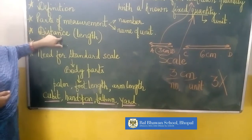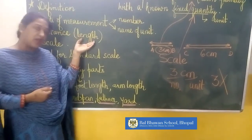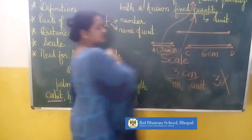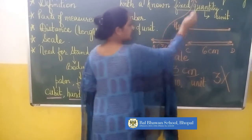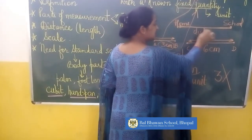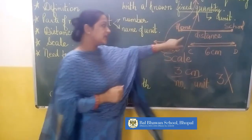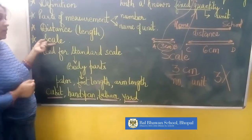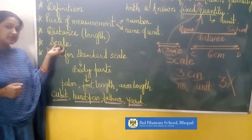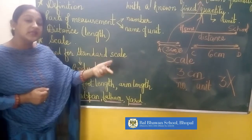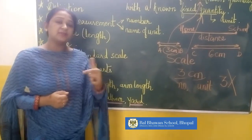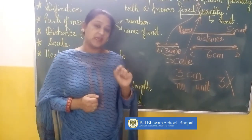Now comes distance. What is distance? Distance means length. Length is the part between two points. Suppose this is your home and this is your school — in between these two points we call it distance, or we can also call it length. Now, what makes our work easier to measure length? It is the scale. A scale can be taken from one place to another easily — you can carry it anywhere, we can carry the measuring tape anywhere. Also, the readings on the scale will never change.